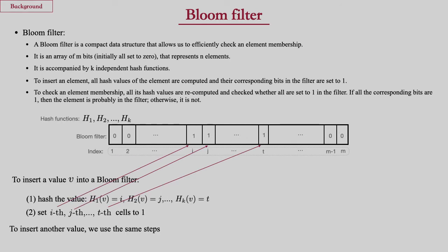A Bloom filter is another data structure commonly used in PSI protocols. It allows us to efficiently check an element's membership. A Bloom filter is an array of bits that comes with k hash functions. To insert an element, we first compute all k hash values of the element, obtaining a collection of indexes, then set the corresponding bits in the Bloom filter to 1.